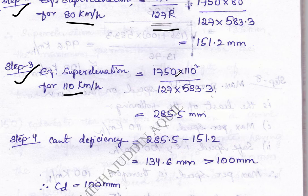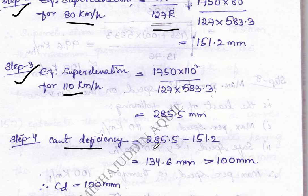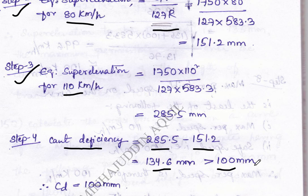Step three: repeat the same calculation for 110 km/h using the formula GV² / 127R. Step four: calculate cant deficiency, which equals equilibrium super elevation for 110 km/h minus equilibrium super elevation for 80 km/h, that is step 3 minus step 2. After solving, we get 134.6 mm, which is greater than the maximum of 100 mm.